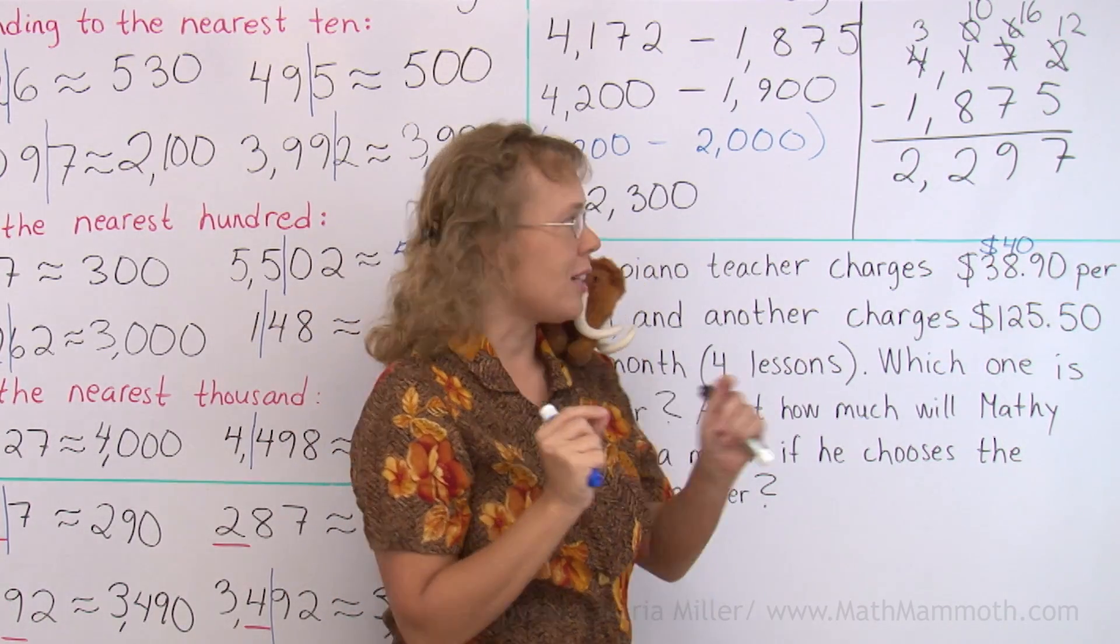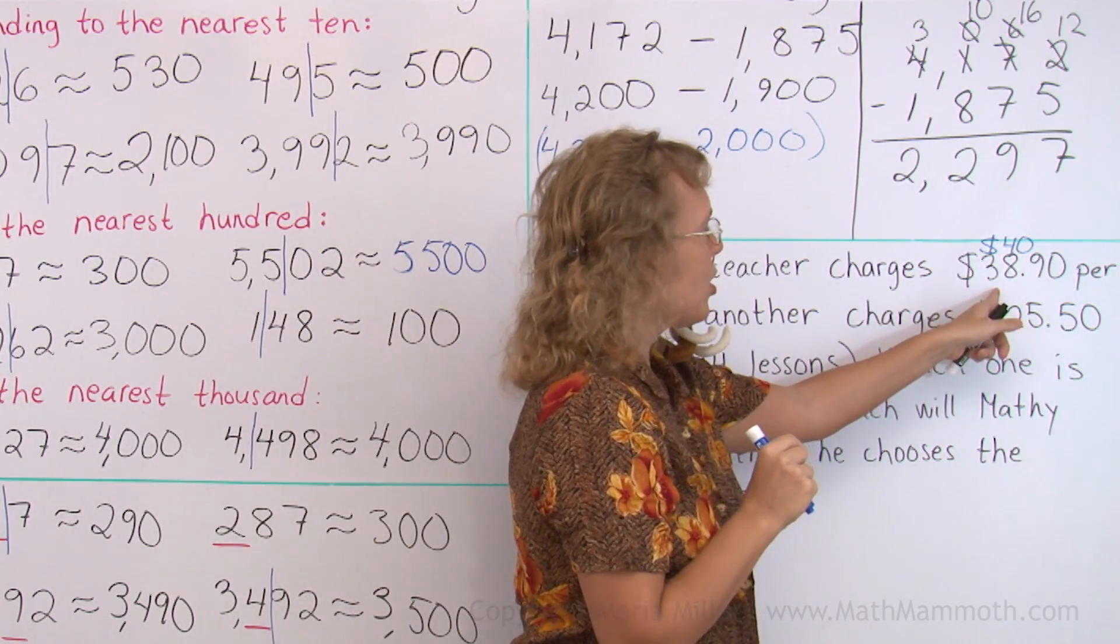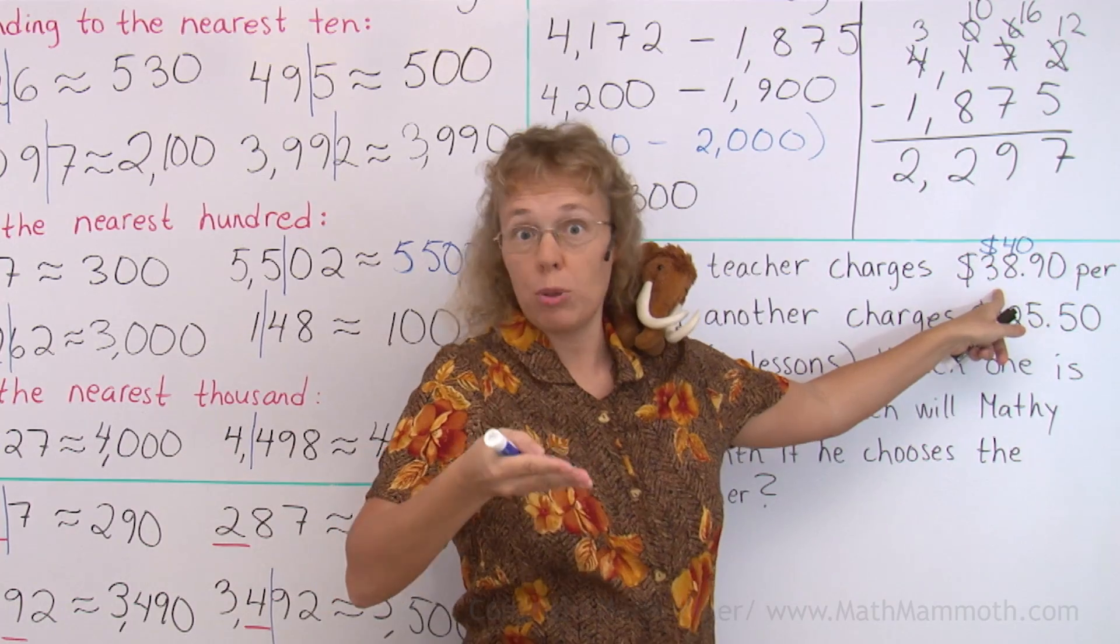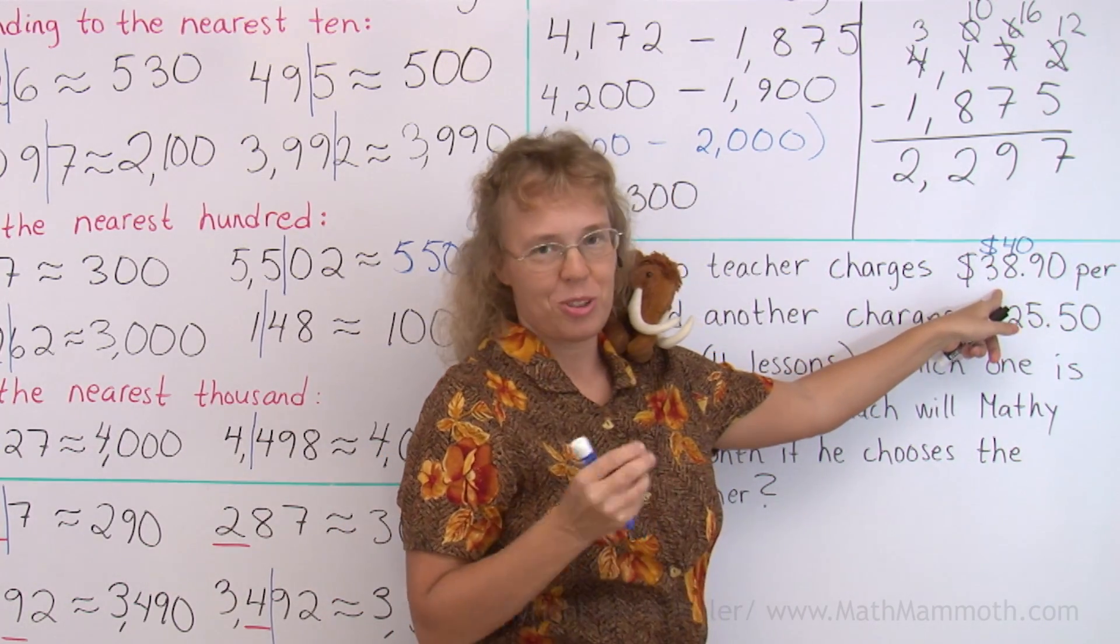But the first number is for one lesson, right? This one here. So if we multiply this times four, then we can compare those two prices.